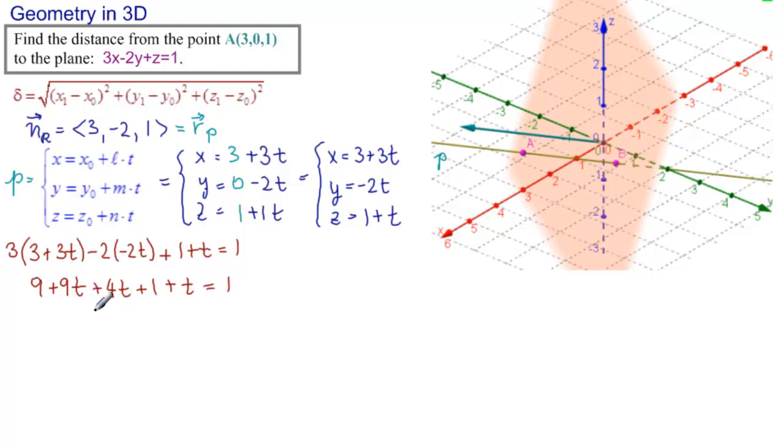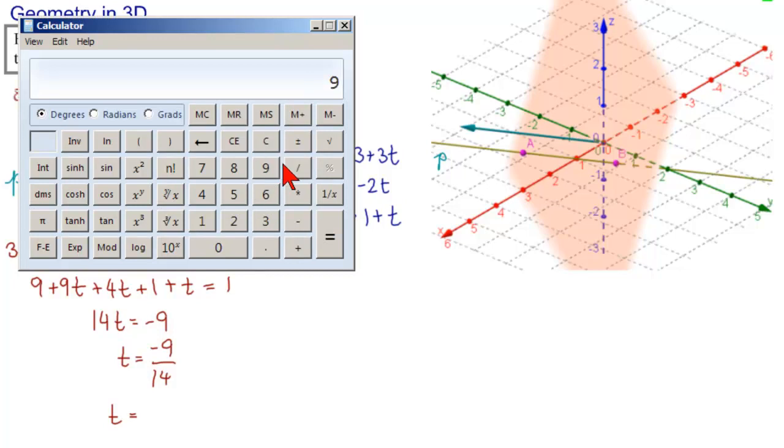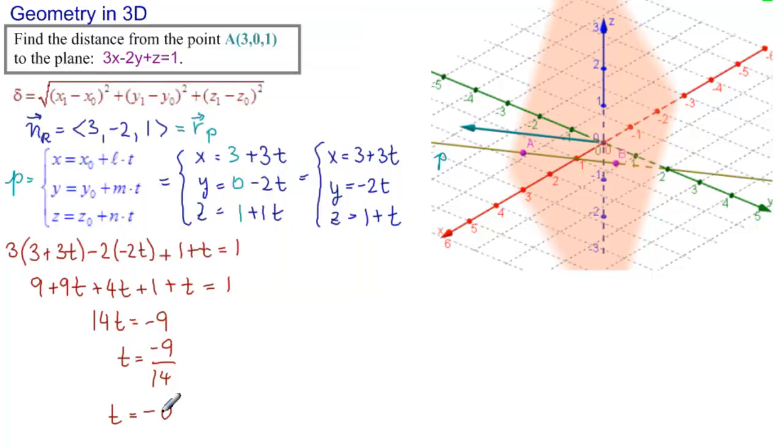So we have 14t equals minus 9. So t equals minus 9 over 14. So t equals, and we get a calculator, and we have 9 divided by 14 equals. We're going to round to 2 decimals. So we have minus 0.64.